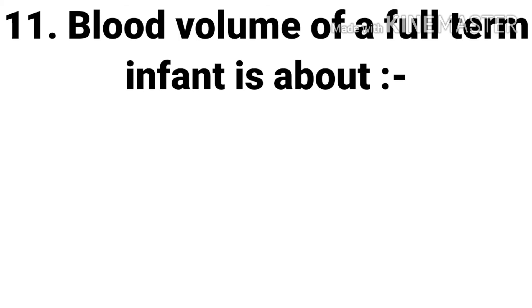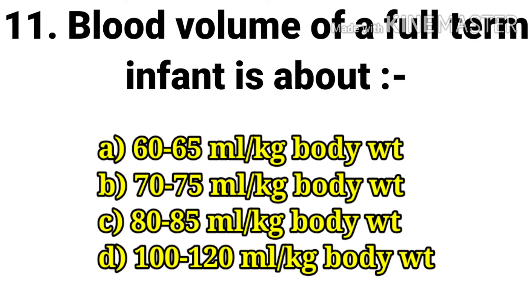The next question: blood volume of a full-term infant is about — options are 60 to 65 ml per kg body weight, 70 to 75 ml per kg, 80 to 85 ml per kg, or 100 to 120 ml per kg body weight. The answer is 80 to 85 ml per kg body weight.